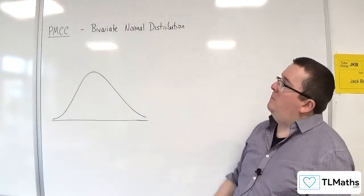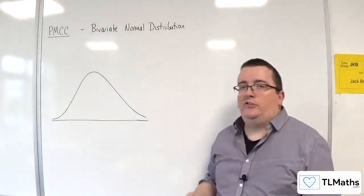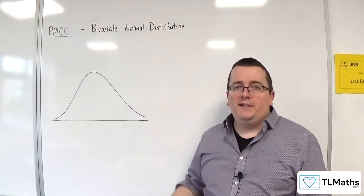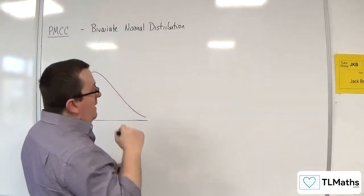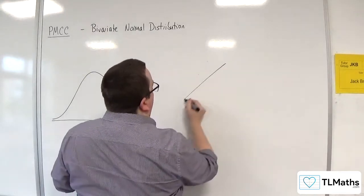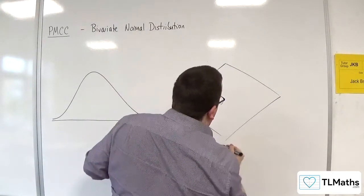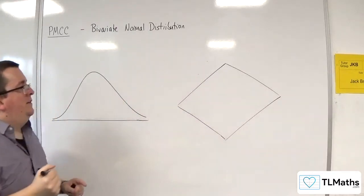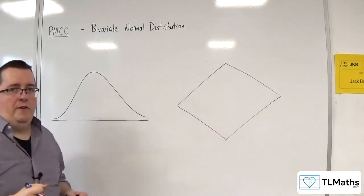Now, if we're talking about bivariate normal distribution, then we're talking about two sets of variables, both of which are normally distributed. So essentially, what I want you to imagine is a 3D graph. I'm going to draw kind of like a plane.